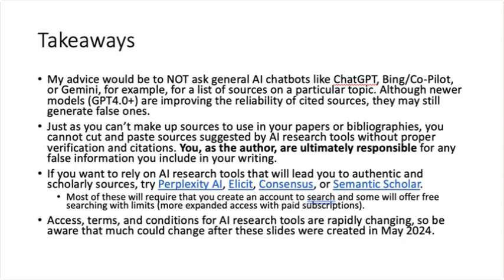Just as you can't make up sources to use in your papers or bibliographies, you cannot cut and paste sources suggested by AI research tools without proper verification. You, as the author, are ultimately responsible for any information you include in your writing. If you want to rely on AI research tools that will lead you to authentic and scholarly sources, try instead Perplexity AI, Elicit, Consensus, or Semantic Scholar.